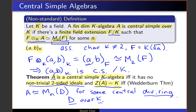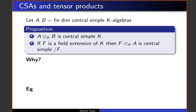I want to talk about some simple facts about how central simple algebras behave with respect to tensor products, which will be very important when we study applications in number theory. We start with two central simple algebras A and B — finite-dimensional, as usual. The first proposition says: if you take these two and tensor them together to get A⊗_k B, this is still a finite-dimensional central simple algebra over k. Similarly, if you take the tensor product of A with some field extension F of k, then F⊗_k A is central simple not over k but over F.